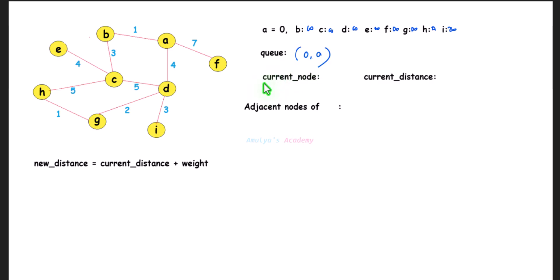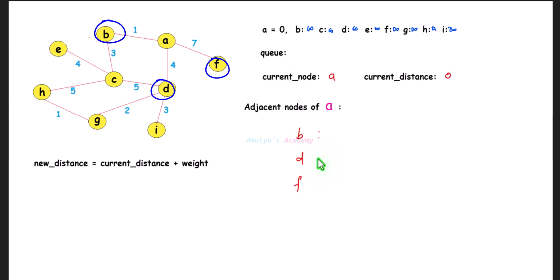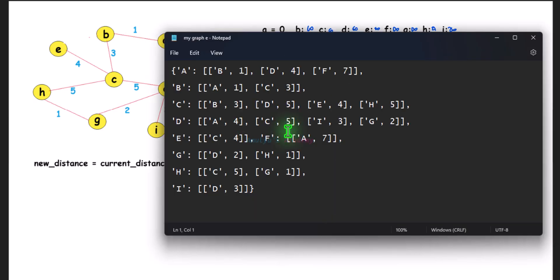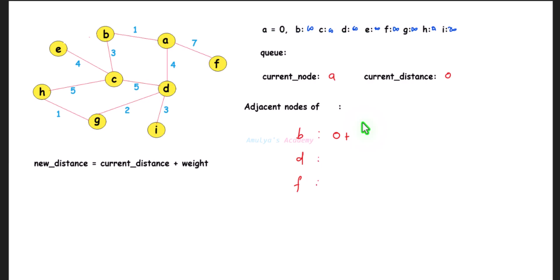Remove node A from the queue — it becomes the current node with current distance 0. Find the adjacent nodes of A: B, D, and F. To find each neighbor's distance, use the formula: current distance plus edge weight. Current distance is 0, weight to B is 1, so 0 + 1 = 1; weight to D is 4, so 0 + 4 = 4; weight to F is 7, so 0 + 7 = 7.